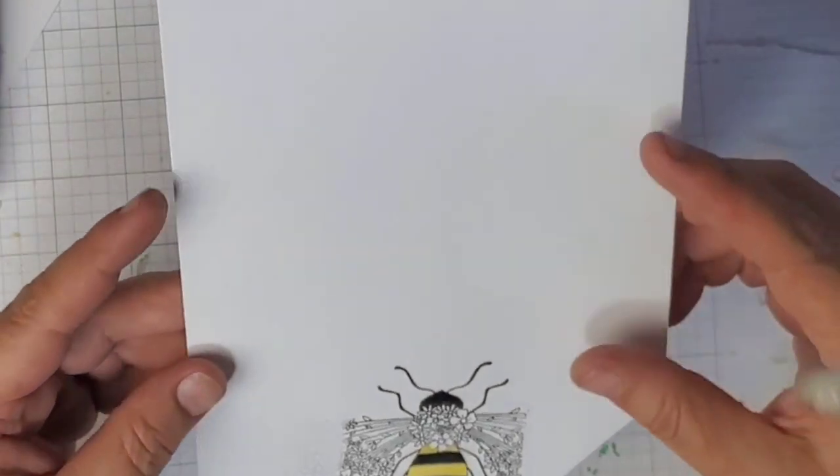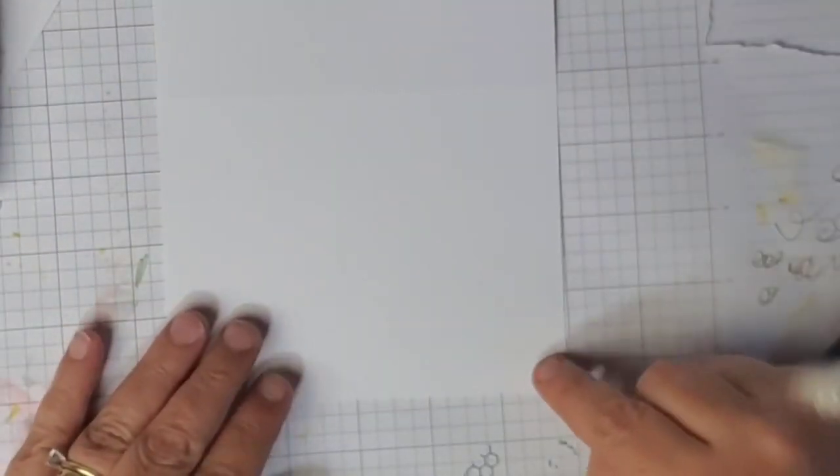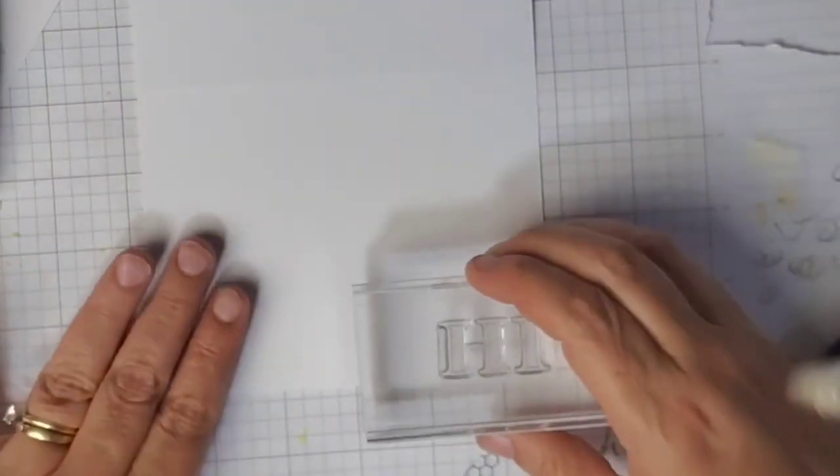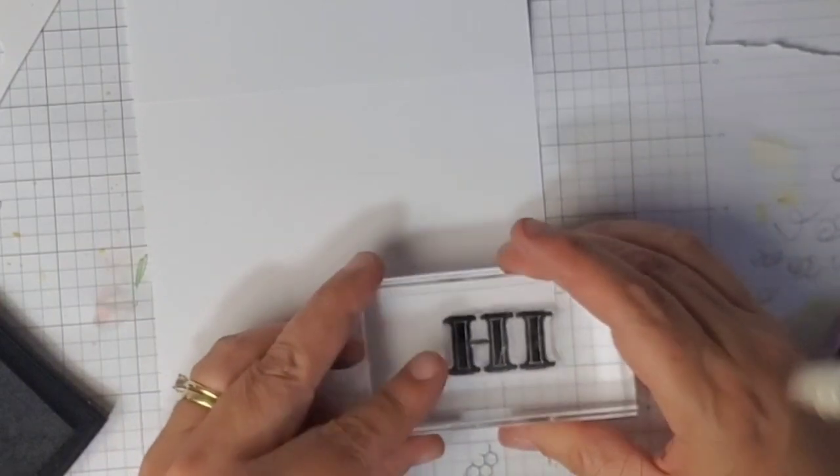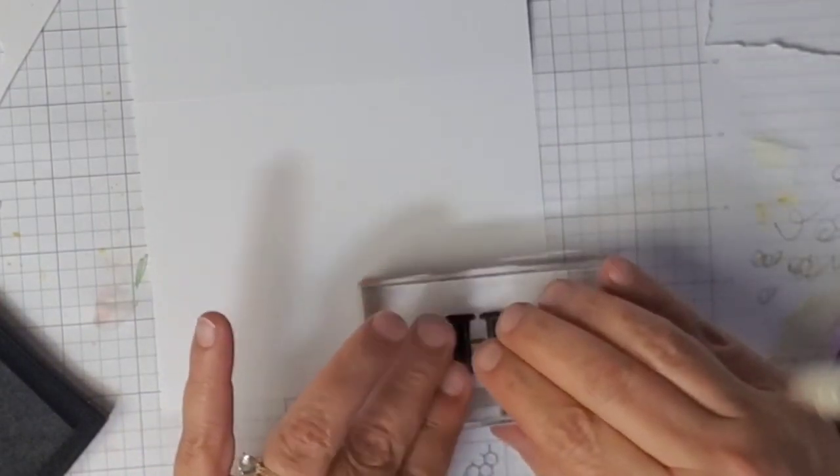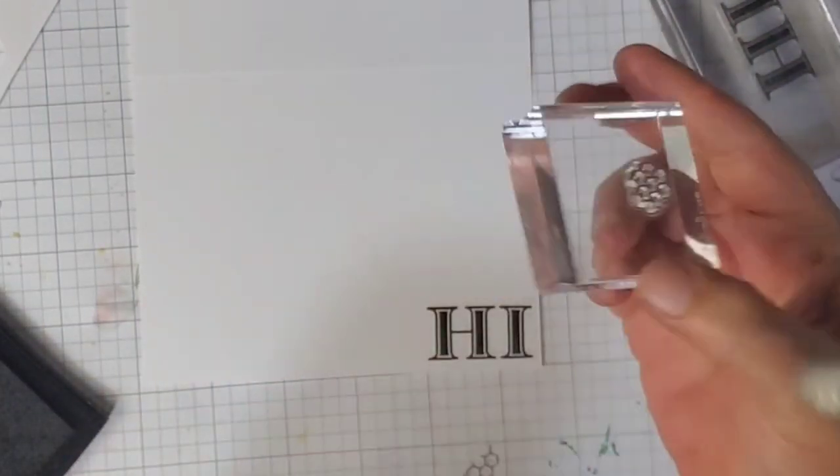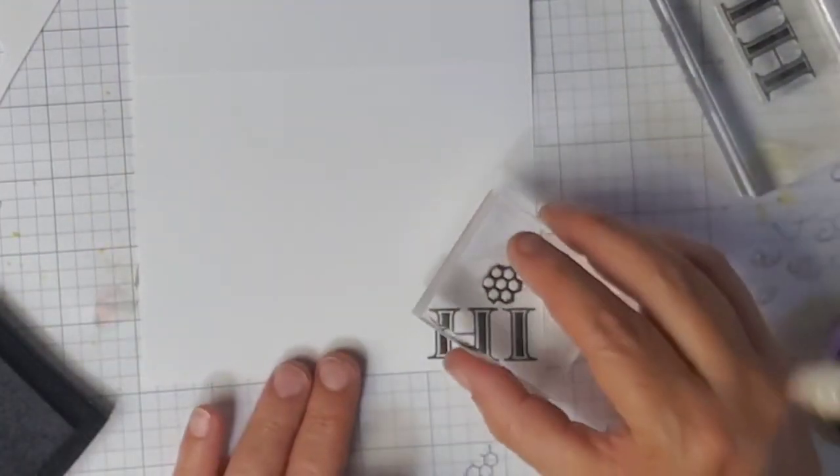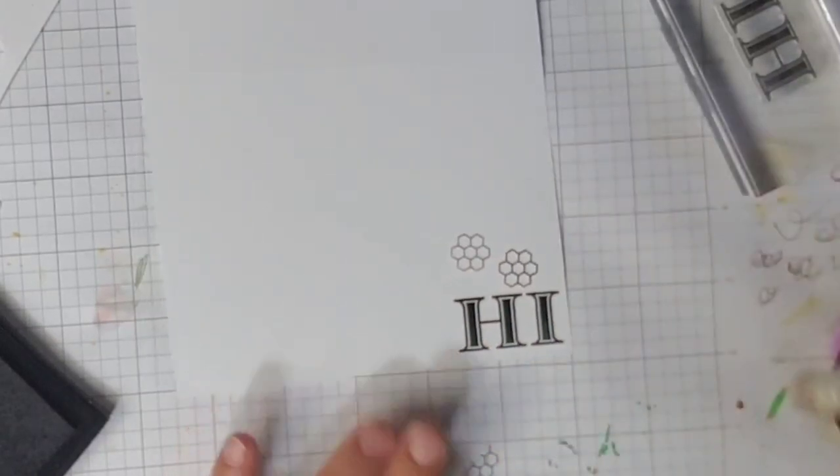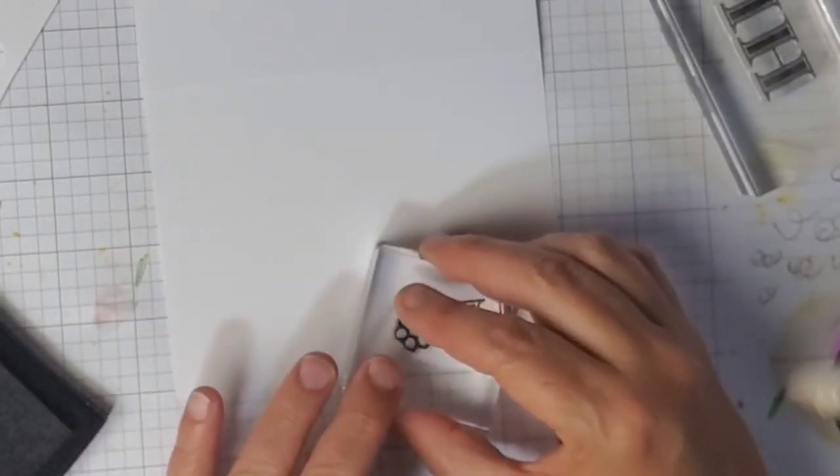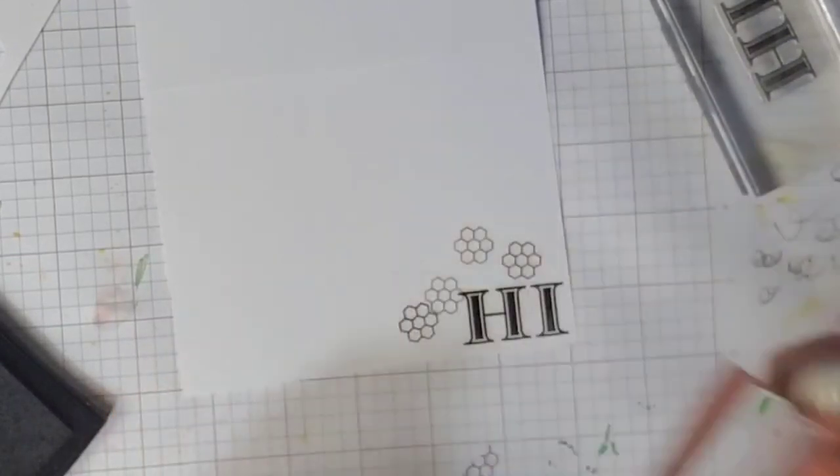While that is drying, I'm going to go ahead and stamp out my 'hi' right here. So it's going to be in the bottom right-hand corner of the inside of your card. Then I'm going to stamp some honeycombs as well. Maybe there, do second generation there, and I'll do one right here. Maybe another second generation. I like that.